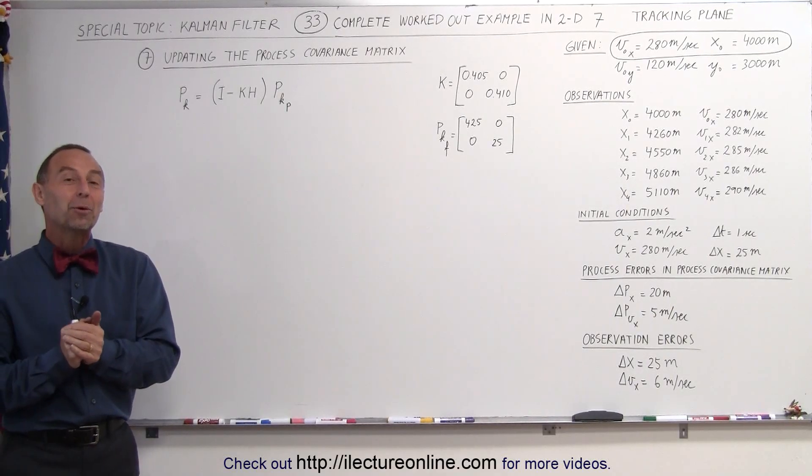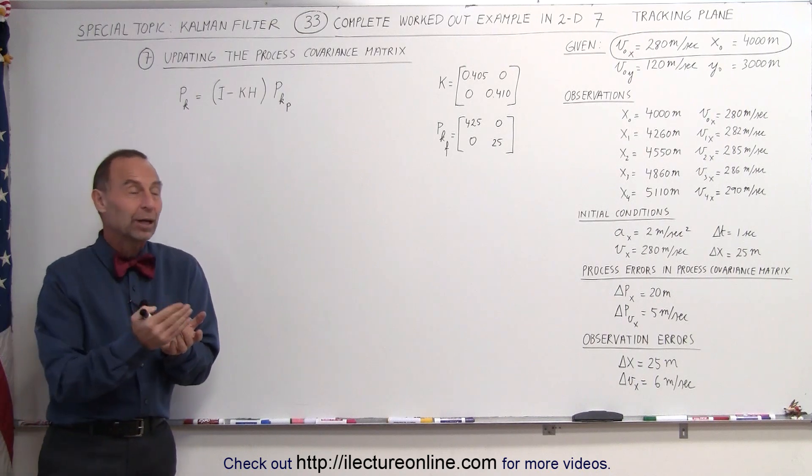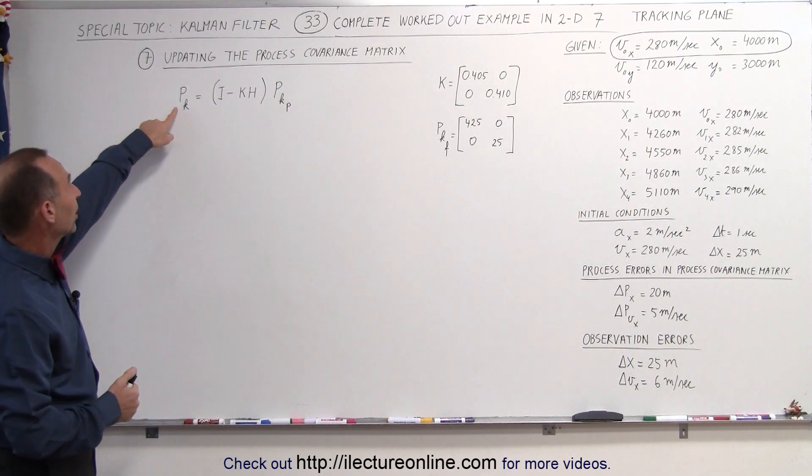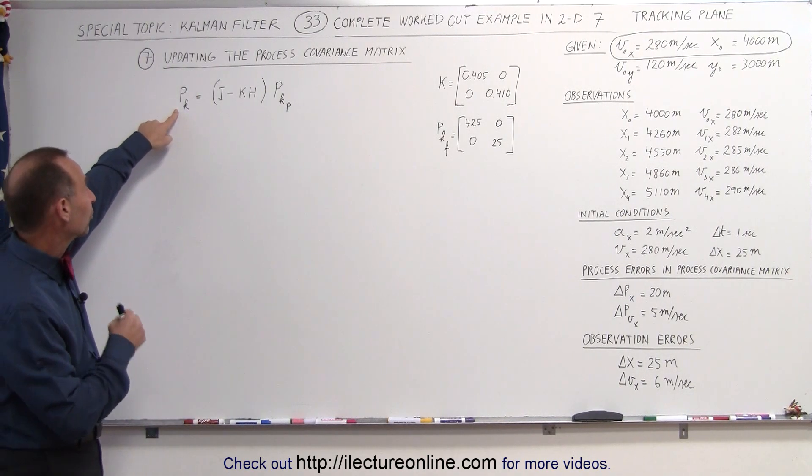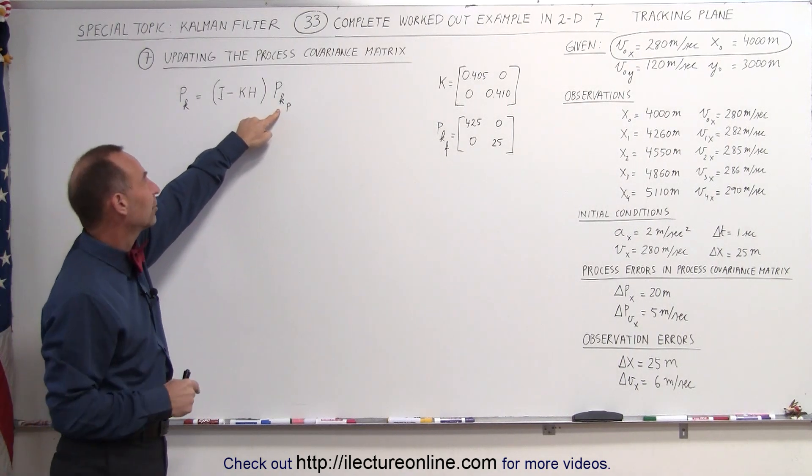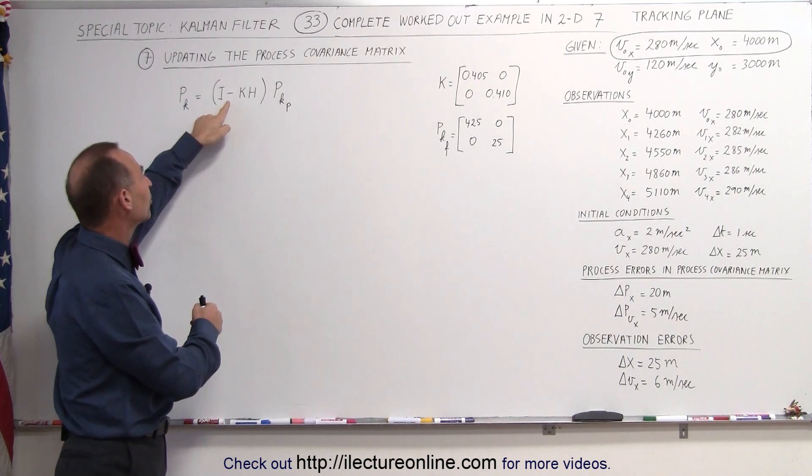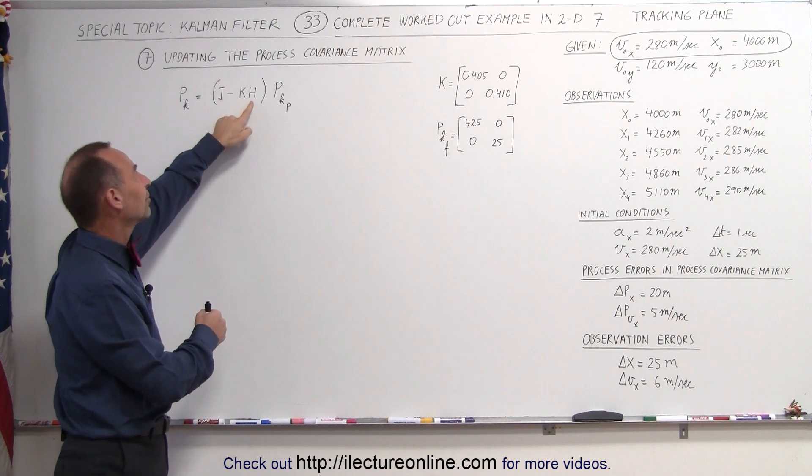Welcome to ElectronLine. Now we're ready to update the process covariance matrix to get ready for the next iteration. The equation tells us that the current process covariance matrix is equal to the predicted, the previous predicted process covariance matrix times the identity matrix minus the Kalman filter times H.